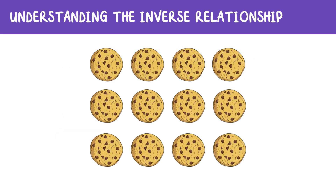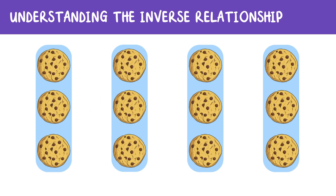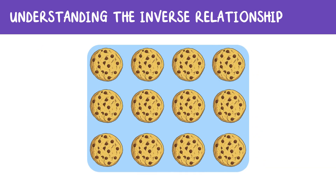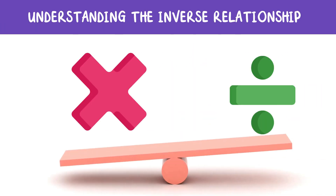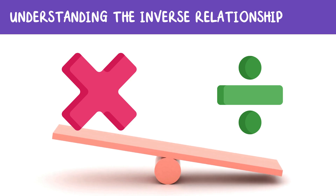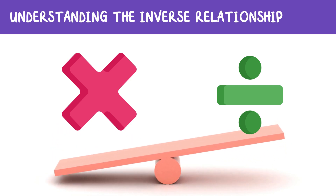Think of it like this: if you start with 12 cookies and split them into 4 equal groups, each group gets 3 cookies. But if we take those groups of 3 cookies and put them back into 4 groups, we're right back at 12. So when we use fact families, we're just flipping between multiplication and division.